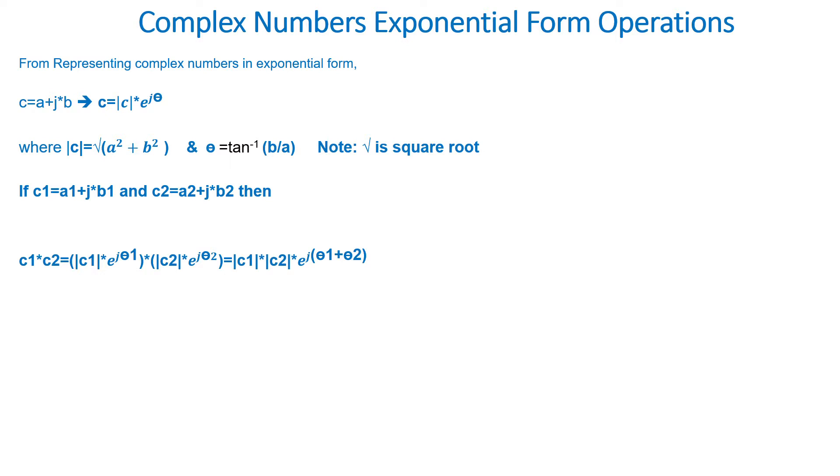...the magnitude of C1 times the magnitude of C2 times e to the power of j times theta 1 plus theta 2. Now if we do division, C1 divided by C2...